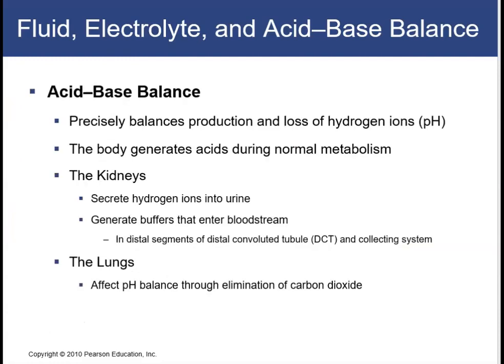The third balance we will look at is acid-base balance. This balances the production and loss of hydrogen ions. Free hydrogen ions are what determine the pH. The body is constantly generating acids during normal metabolism. When we exercise, our muscles produce lactic acid. When we digest and metabolize proteins, our body produces sulfuric acid and phosphoric acid. These are strong acids and a constant source of free hydrogen ions. The kidneys help by secreting hydrogen ions into the urine and generating buffers that enter the bloodstream, occurring in the distal convoluted tubule and the collecting system of the kidney.